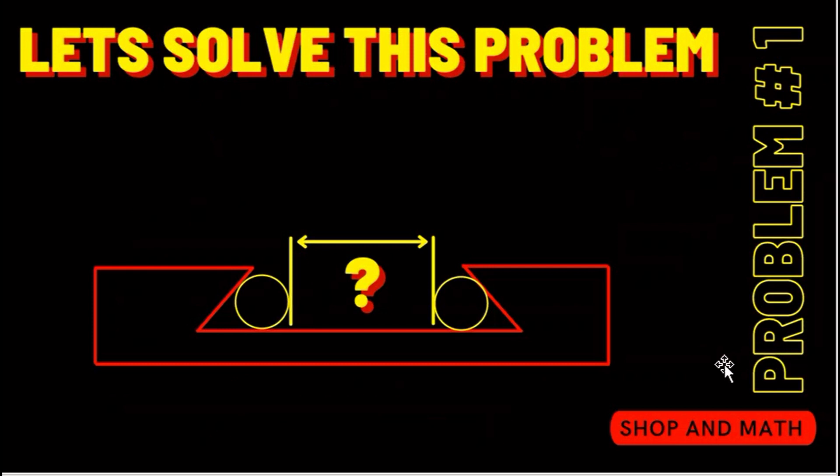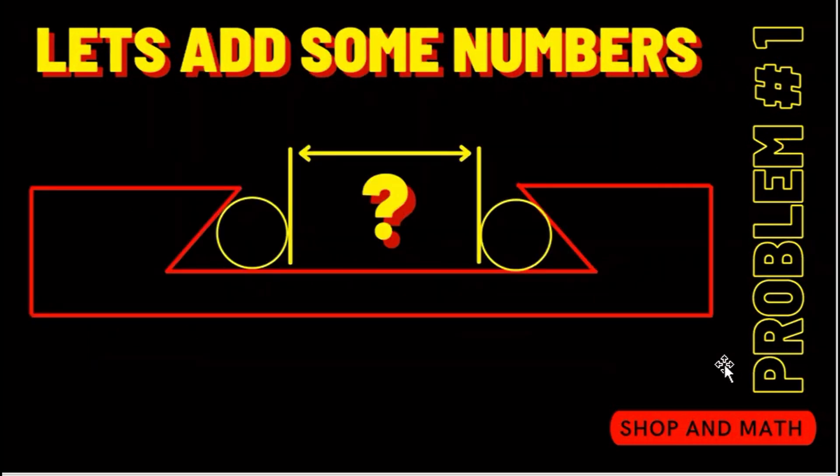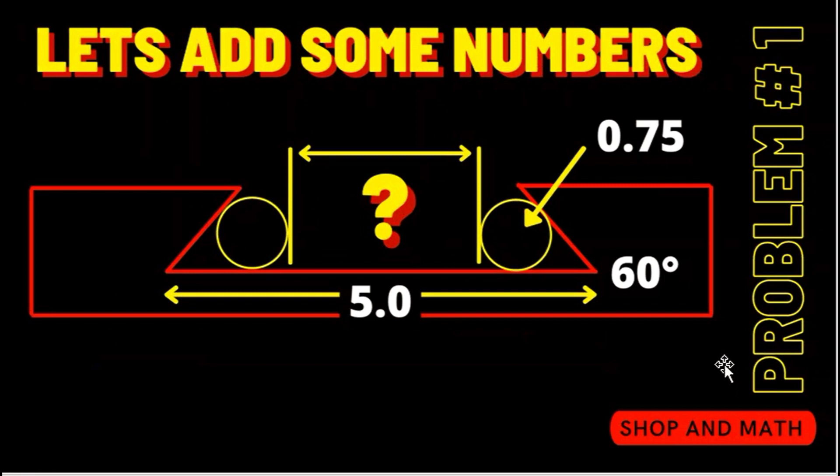So let's solve this problem, problem number one. Let's add some numbers. So we have 60 degrees here. We're going to say that our dowel pin is three quarters of an inch or 0.75 and we're going to say from tip to tip here is five inches.